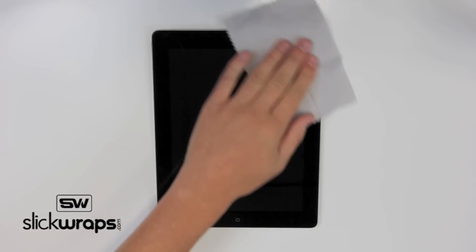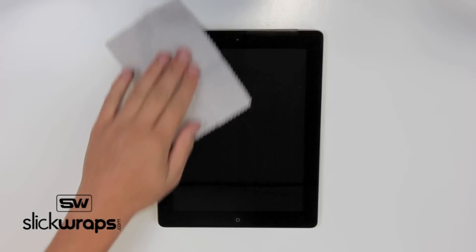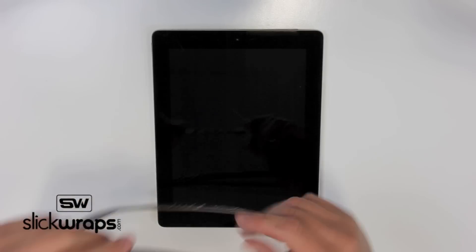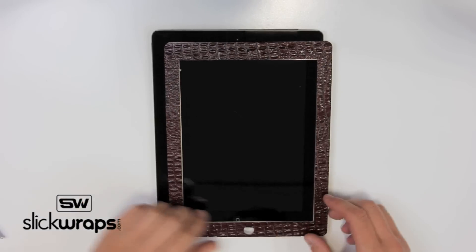Just like with the back installation, take your microfiber cloth and clean the front of the iPad 2. Next, position the front piece before installation.